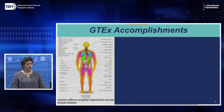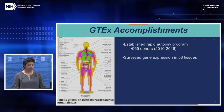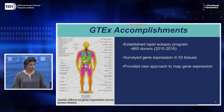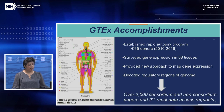We're building off the accomplishments of GTEx, which established a rapid autopsy program recruiting 965 donors from 2010 to 2016. It surveyed gene expression in 53 tissues, including 11 subregions of the brain, provided a new approach to map gene expression, and decoded regulatory regions of the genome. As a result, it published over 2,000 consortium and non-consortium papers, second only to the Cancer Genome Atlas in data access requests.